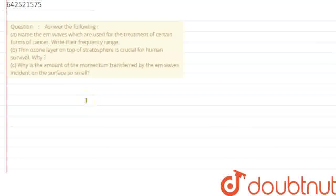Hi everyone, so we are given with a question which says we need to answer the following. First, we need to name the electromagnetic waves which are used for the treatment of certain forms of cancer. Also, we need to write their frequency range. In the second part, we are interested in finding the reason why thin ozone layer on top of stratosphere is crucial for human survival, why?